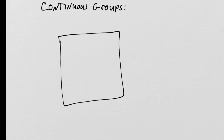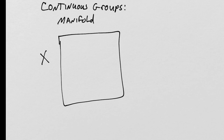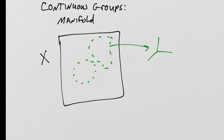Let's continue with our study of continuous groups. We'll begin with the manifold that represents our group, which we'll call X. This represents the entire set, so every little point in here represents an element of X. X is both a group and a manifold, so every section of X can be mapped into some Cartesian space R^η, where η is the dimensionality of these mappings.